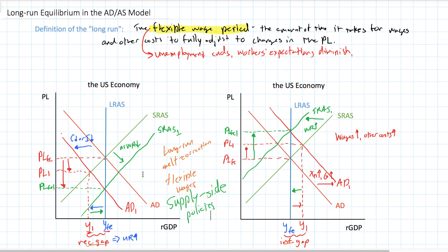In this video we introduced the definition of the long-run in macroeconomics — the period of time over which wages and all other costs of production are fully flexible and will adjust to the price level in the economy. Because wages and other costs adjust in the long-run, output will always return to its full employment level. This explains why the long-run aggregate supply curve is vertical at the full employment level of output — no matter how much demand, inflation, or deflation there is, in the long-run output will always return to full employment because wages will always adjust to whatever the price level and level of demand is.